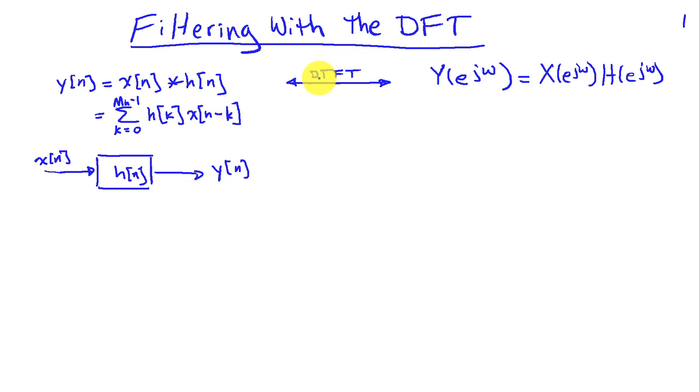Now we know that if we take the discrete time Fourier transform, we have the product X times H being equal to Y(e^jω). And the question that we want to raise is whether we can implement this kind of filtering in the frequency domain using the DFT.